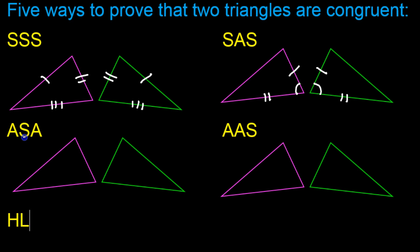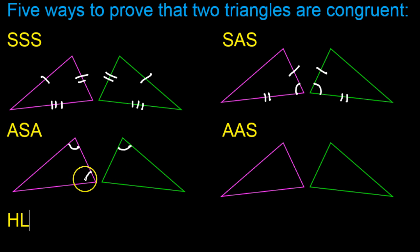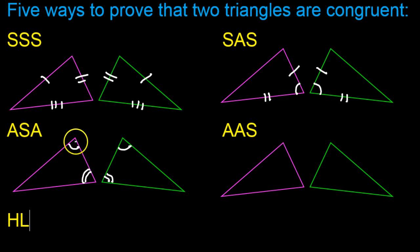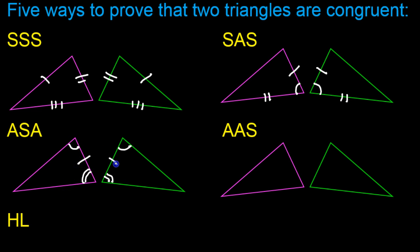Angle, side, angle: we have two angles and a side congruent to two angles and a side. The side has to be between the angles. So for example, if we know that these angles are congruent — there's the first angle — and let's say if we know that these angles are congruent — there's the second angle — now the side has to be the side between the angles. It couldn't be this side over here; it would have to be this side and this side.